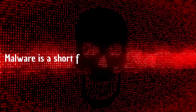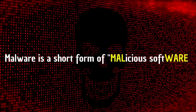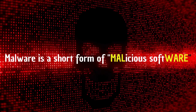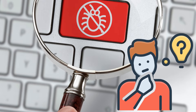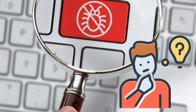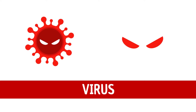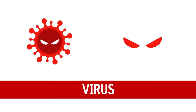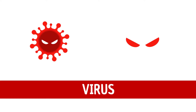Malware stands for malicious software. They come in different types, and knowing them helps us understand what the malware does and how to keep protected while using the internet. First, the virus — the original digital threat and one of the oldest types.